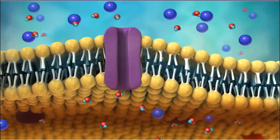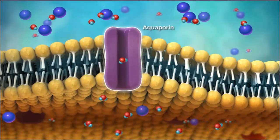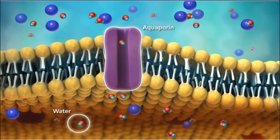The plasma membrane contains proteins called aquaporins, which are specialized channels for the movement of water during osmosis.